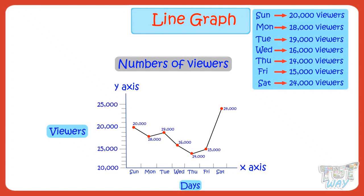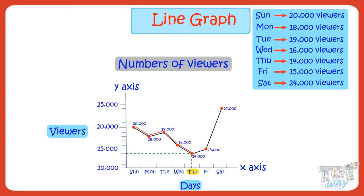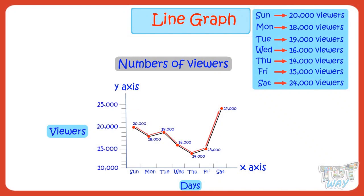Let's read the line graph. Our line graph says 20,000 people watched the movie on Sunday, which decreased by 2,000 on Monday — so it's 18,000 people on Monday. Then on Tuesday, number of viewers increased to 19,000. On Wednesday, number of viewers decreased to 16,000. On Thursday, number of viewers decreased to 14,000. On Friday, number of viewers increased to 15,000. On Saturday, number of viewers increased to 24,000 — so there is a big rise on Saturday. A line graph clearly shows the peaks and dips, where peaks show increase and dips show decrease in the numeric values on y-axis.